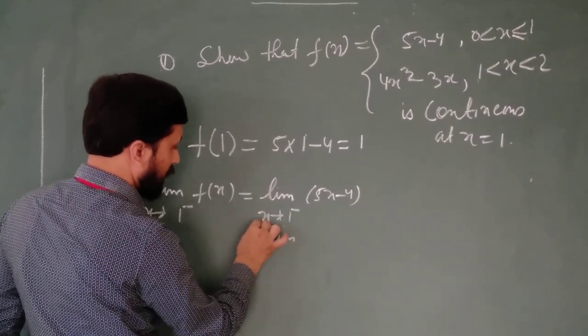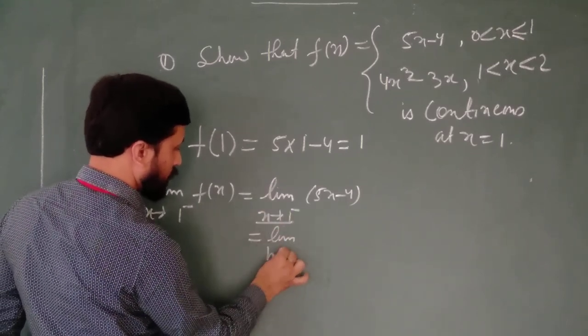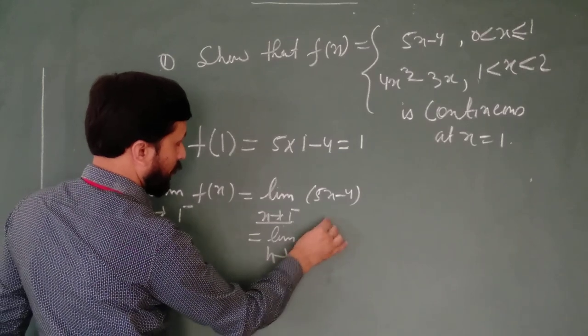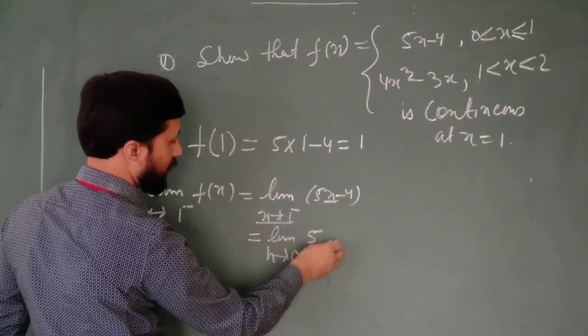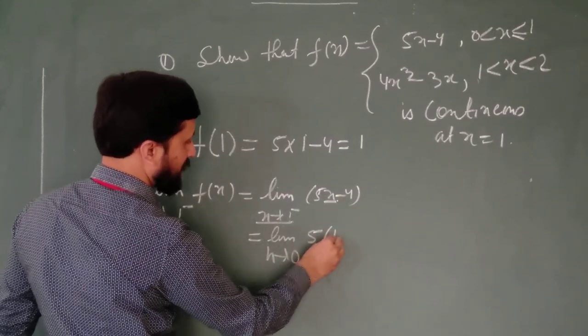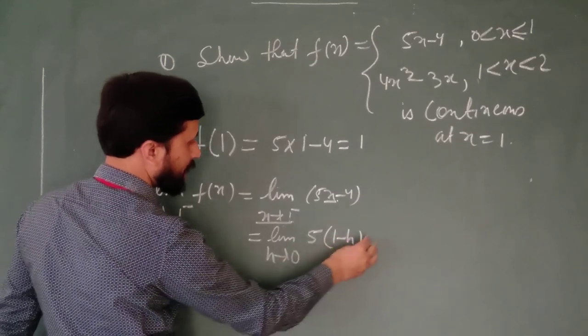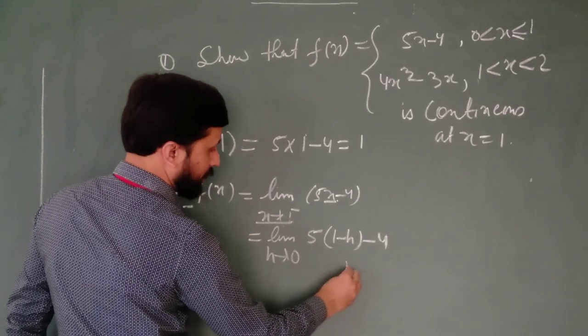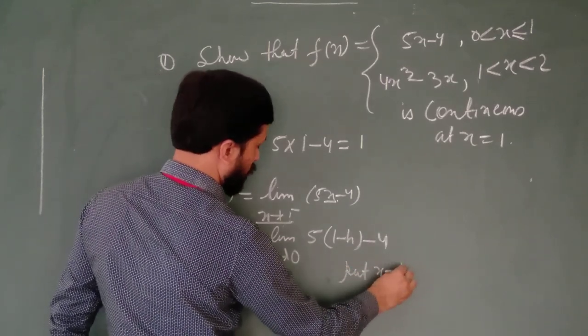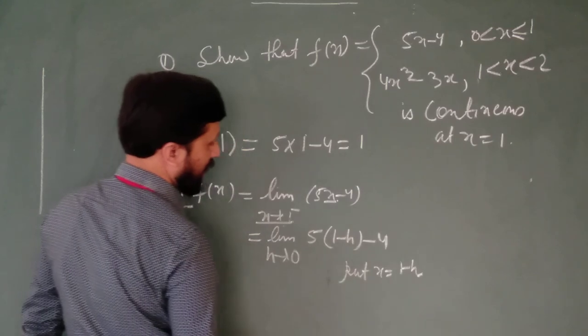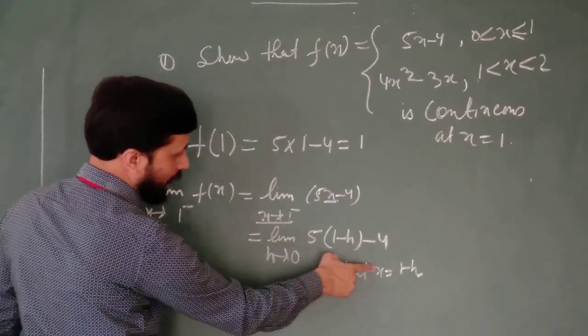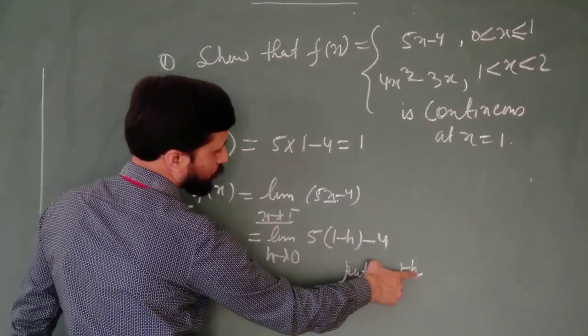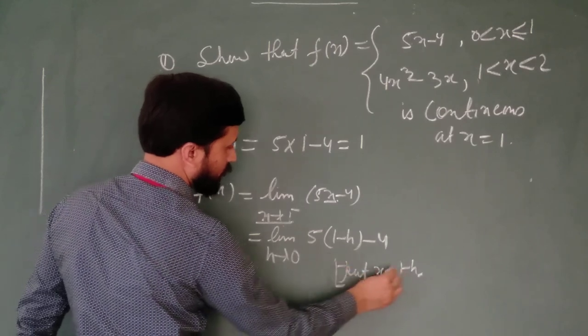Now we will replace this with h tends to 0. And over here, we will put in place of x, 1 minus h. This you already did in class 11. You can write here, put x equal to 1 minus h. As x approaches to 1, h will approach to 0. Put this in place.